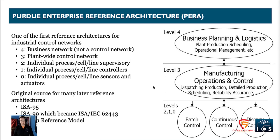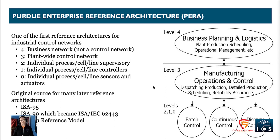Levels zero, one, and two are organized into lines or cells, also referred to as processes. This terminology differs from sector to sector. We're going to have multiple processes in an organization, and those tie into a larger portion of the network — mainly to communicate with master servers on the plant-wide control network. Master servers at level three include things like Active Directory, asset management, and data historians.